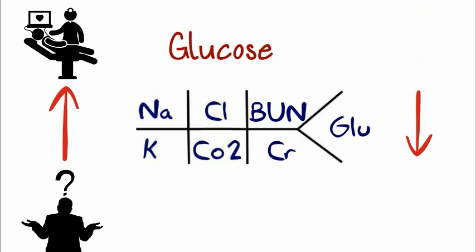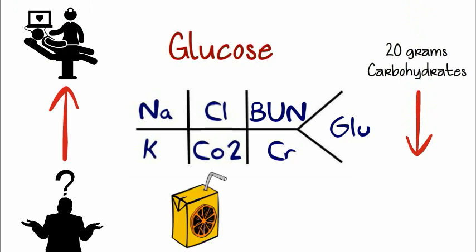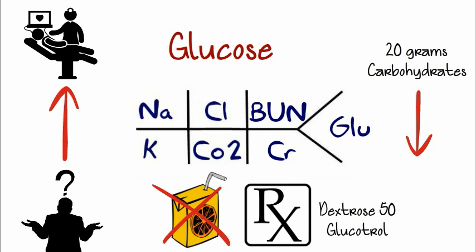Low is acute. Do something now. First, can they swallow? If so, 20 grams of carbohydrates or orange juice if they can swallow. If they can't, then IV dextrose or glucose, and a doctor's call.